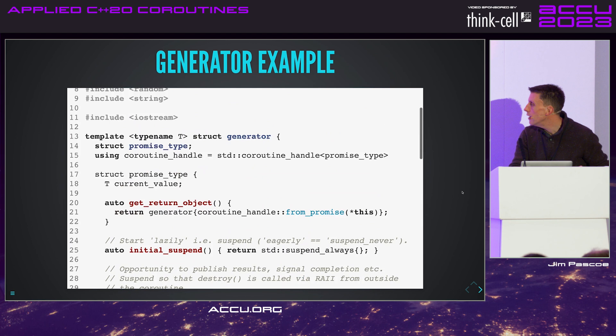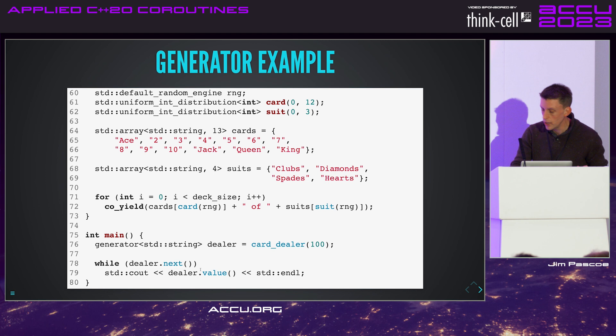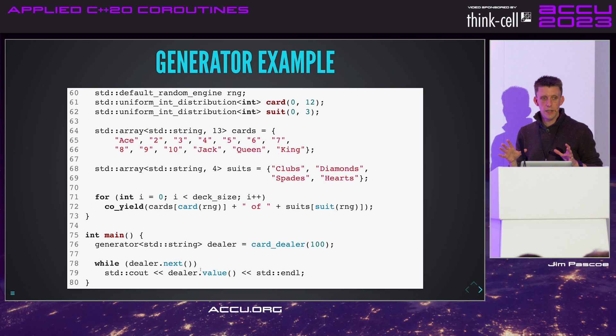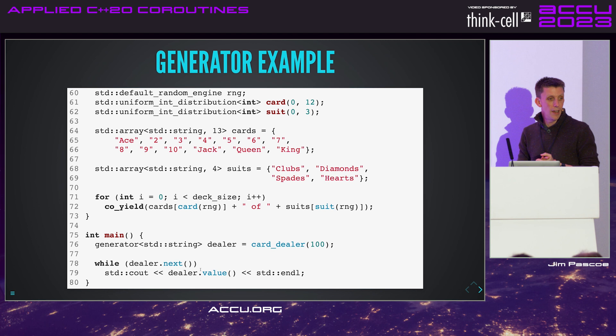If we look at the application code, there's a while(dealer.next()) loop that does the resume and passes back a value, and we print it while the coroutine can continue — that is, while we still have 100 cards. If you take this example, compile it with Clang or GCC, run it, and interact with it — that's probably the most useful thing you can do. Any questions on that? Quite a lot of complexity.